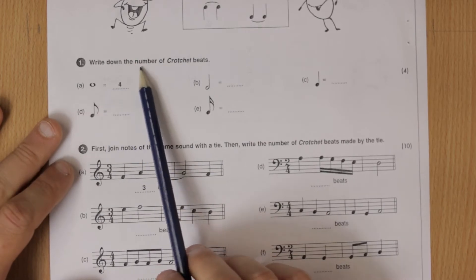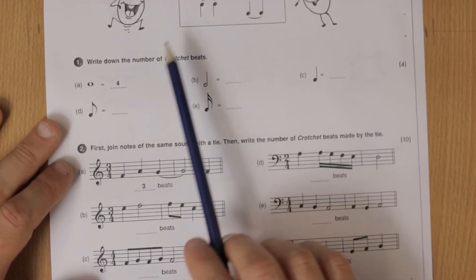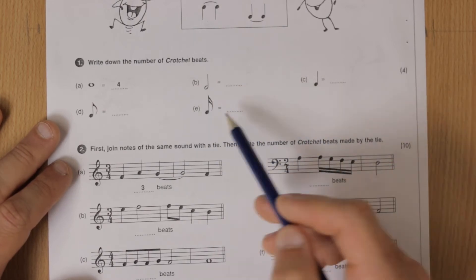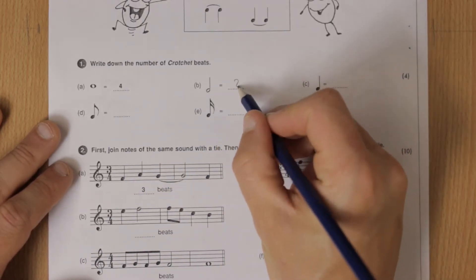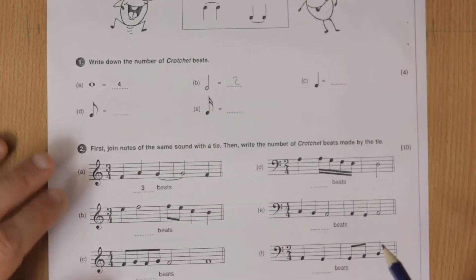Okay, so write down the number of crotchet beats. So first of all forgetting the ties, we're just going to write how many these are each worth. So we've got a minim which is worth two and then you can write down what those are.